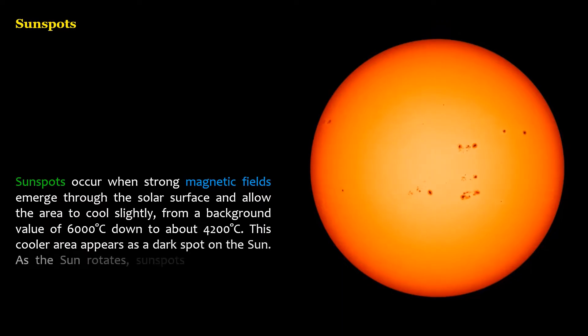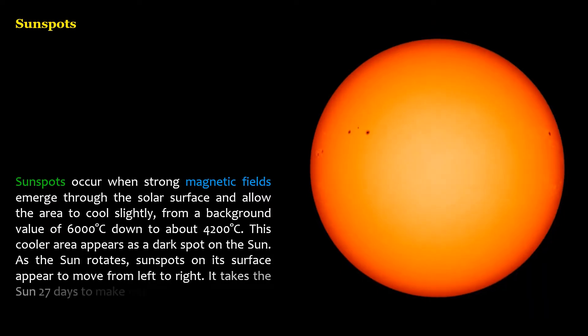As the sun rotates, sunspots on its surface appear to move from left to right. It takes the sun 27 days to make one complete rotation.